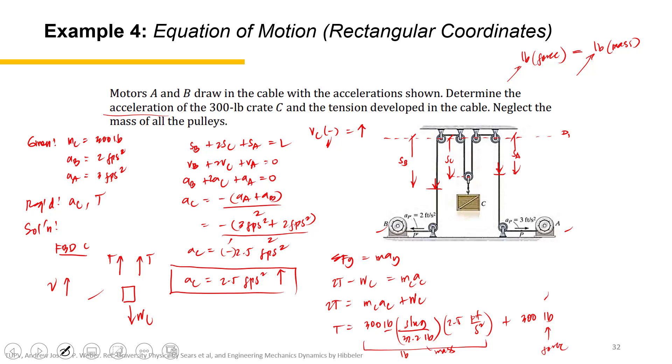Force here, force here. They can be added. The final answer, the final tension: 300 divided by 32.2 times 2.5 plus 300, all over 2 is 161.65. Alright, that's it.